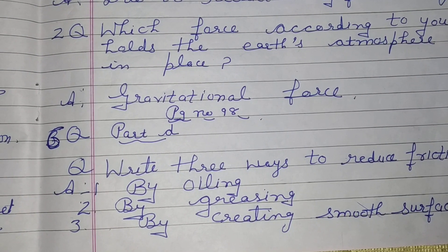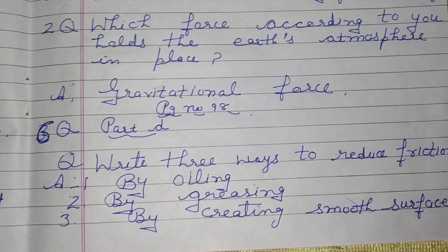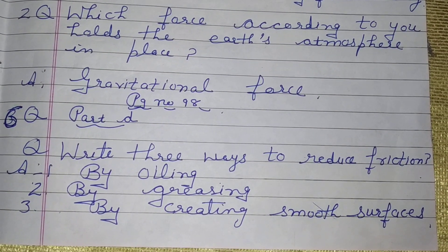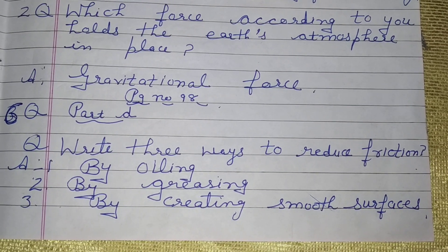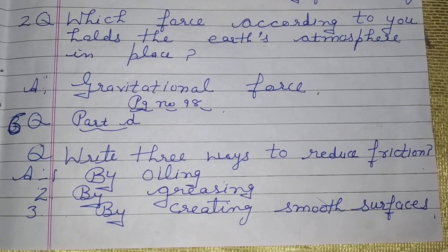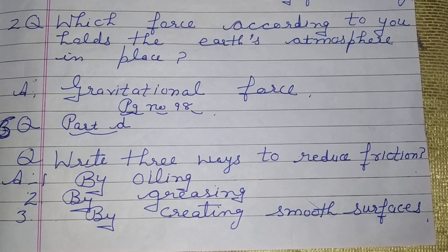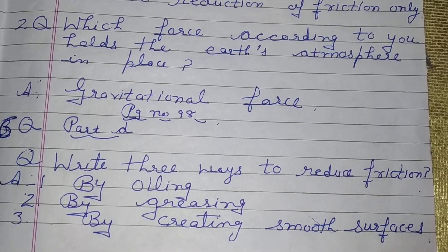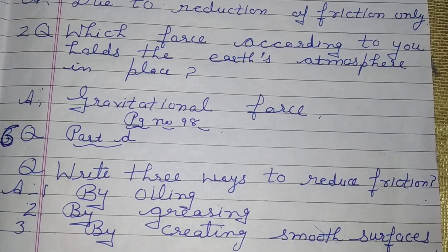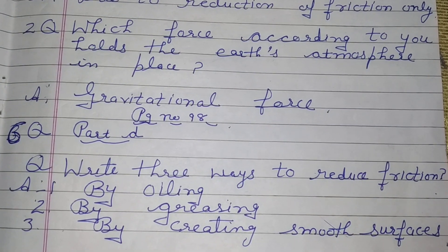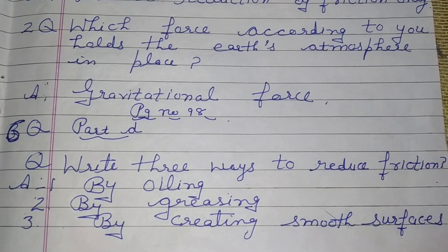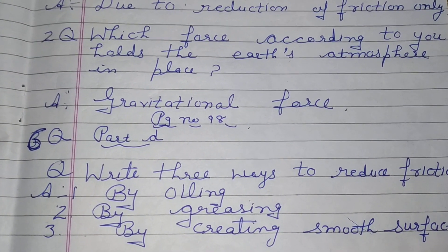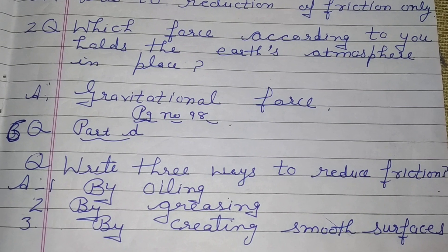Students, now we have finished the HOTS also. Page number 98 — there is one more question. Write down part D, question number 6: Write three ways to reduce friction. Number 1, by oiling. Number 2, by greasing. Number 3, by creating smooth surfaces. This question is in the model test paper.